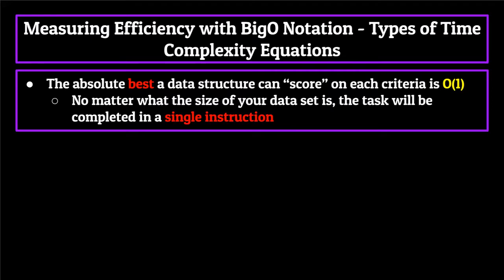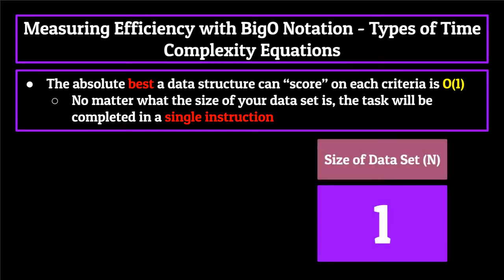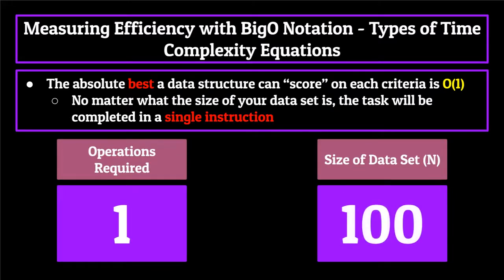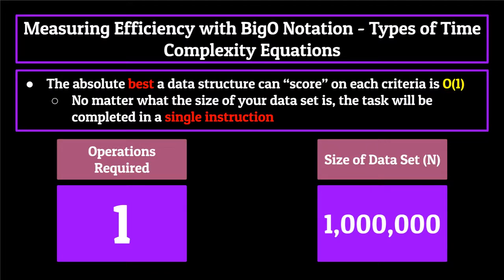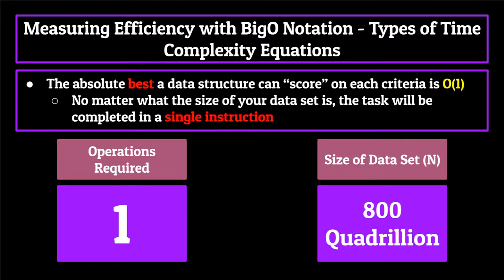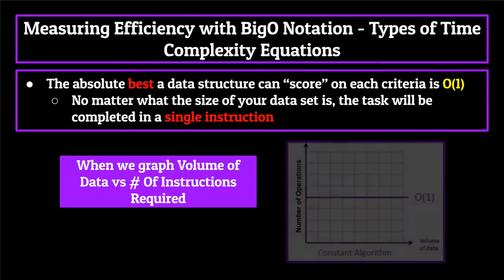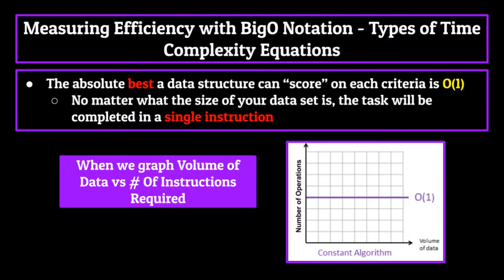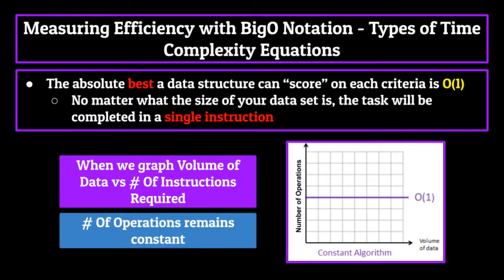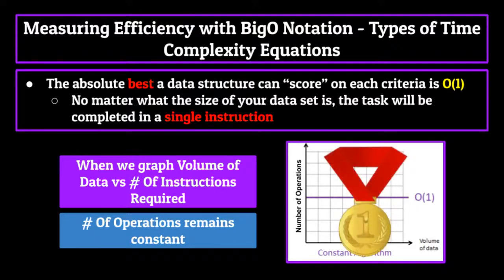O(1) essentially means that no matter what the size of your data set is, the task will be completed in a single step. If your data set has one element, the computer will finish the task in one step. 100 elements — one step. 1 million elements — one step. 800 quadrillion elements — it does not matter, the computer will finish the task in a single step. This is why when we look at the graph of volume of data versus instructions required for O(1), the line remains constant at one. O(1) is the gold standard, absolute best time complexity equation — the Michael Jordan of big O notation.